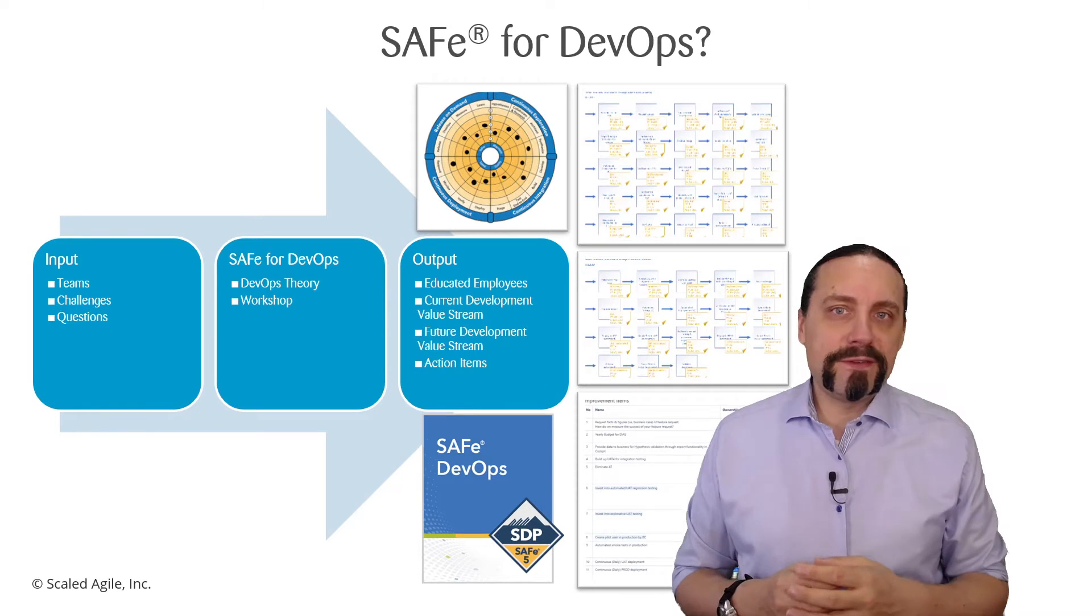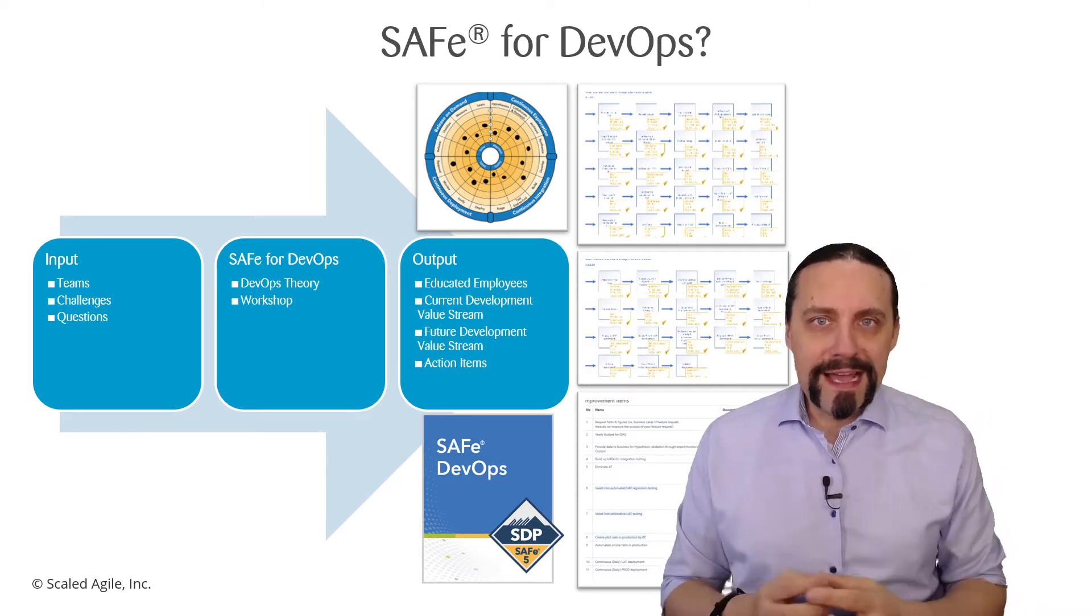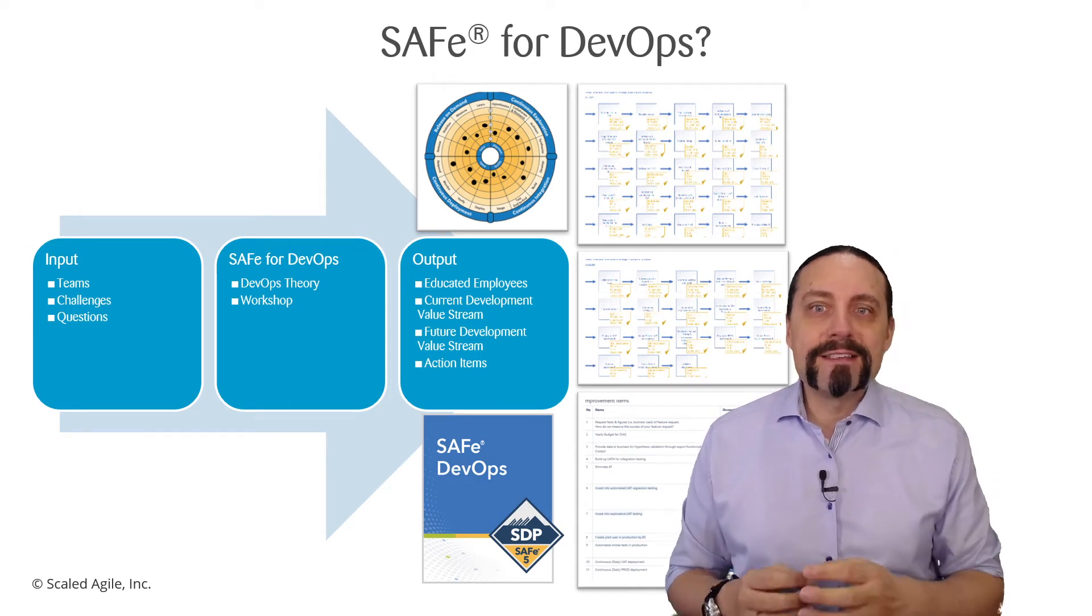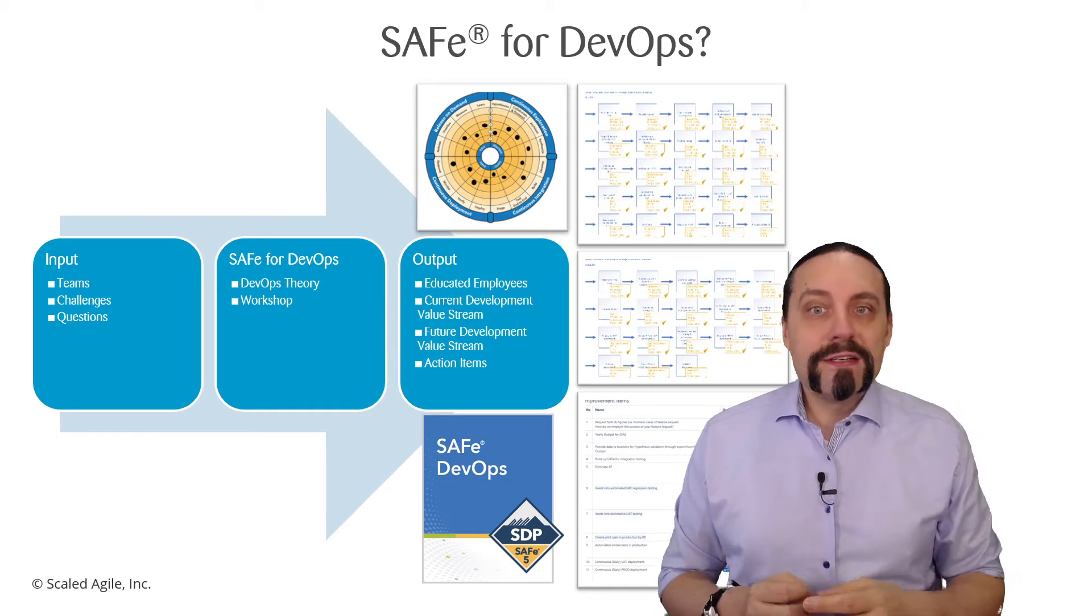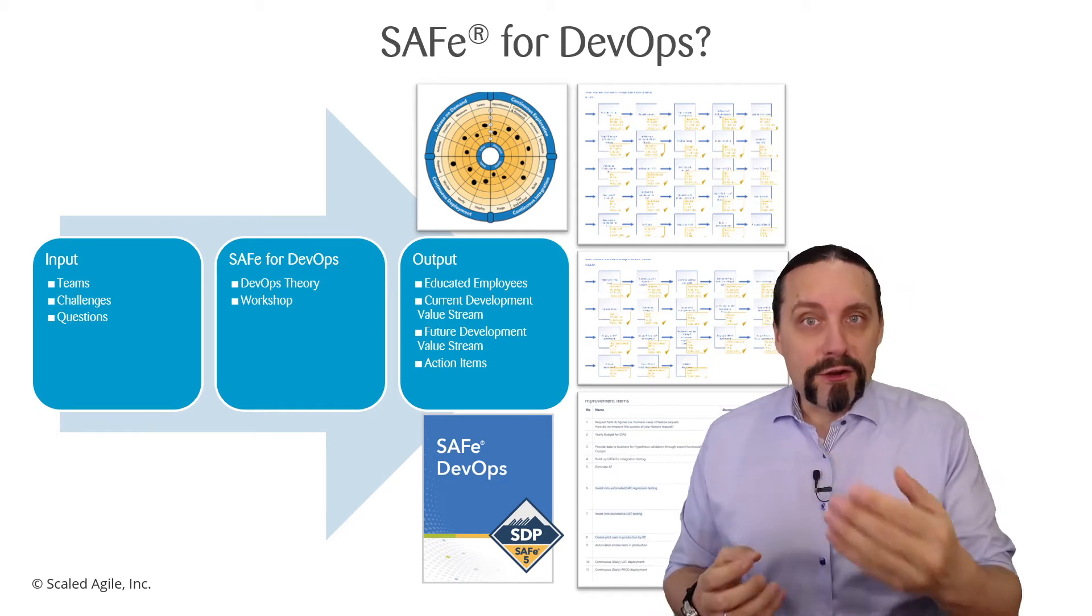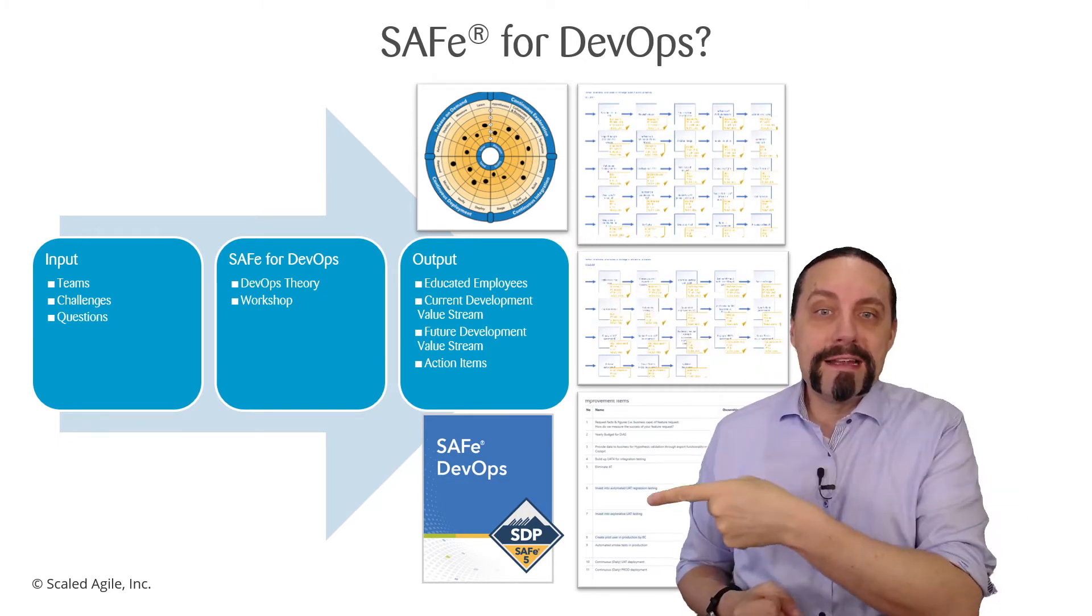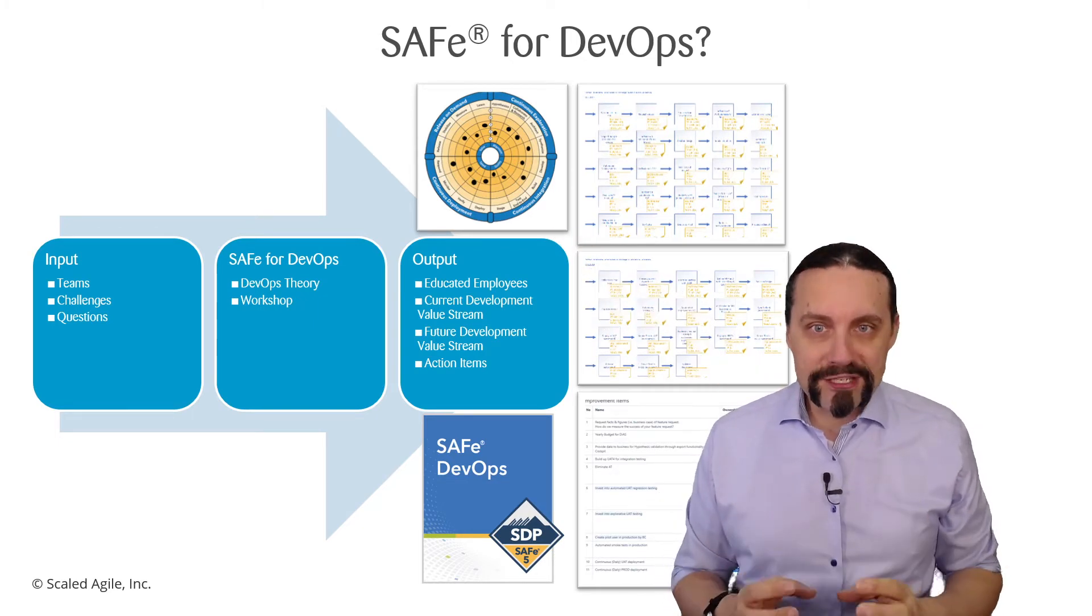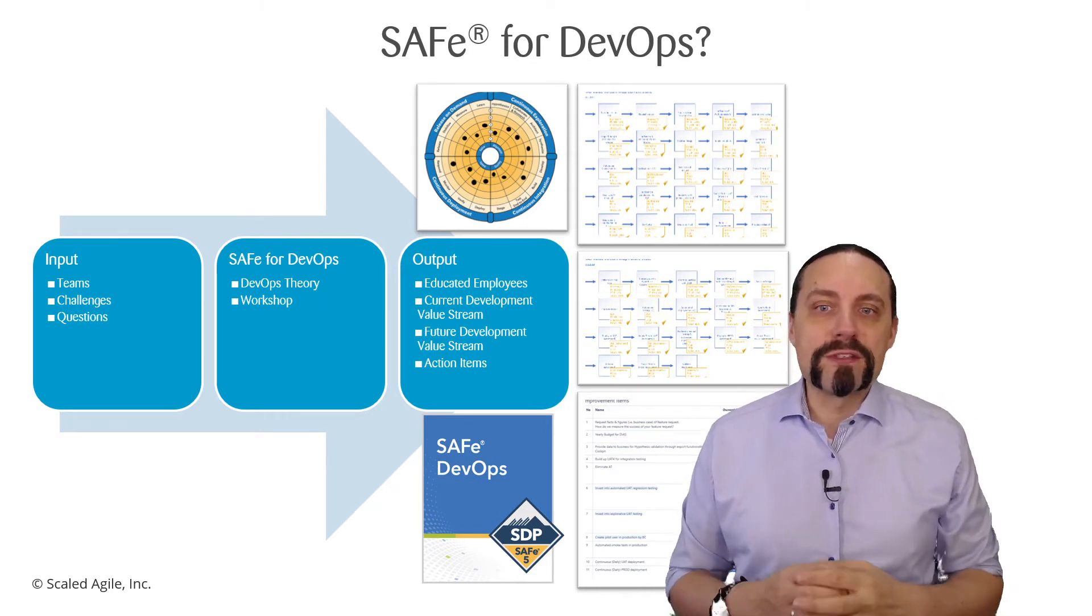And when we have the future value stream we will go and create a set of action items which is prioritized. And the team will leave this course with their current value stream, the future value stream, their assessment and a clear set of action items which they can directly work on after the course.